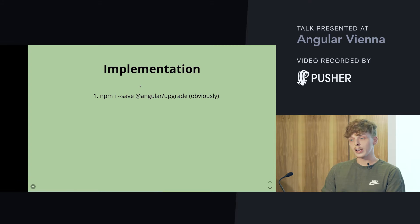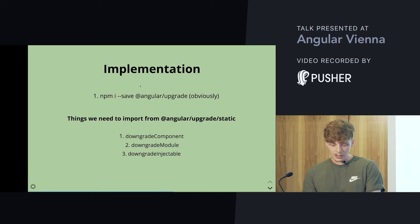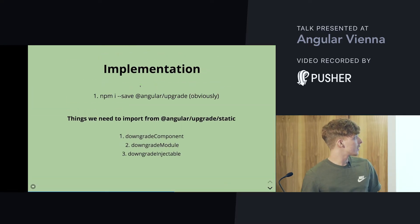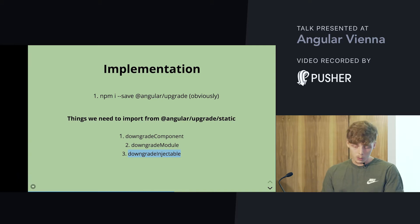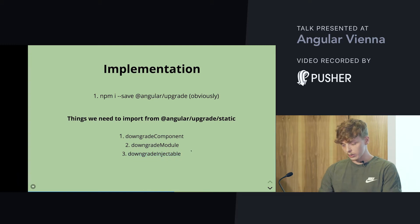For implementation, you first need to install the Angular upgrade package. From Angular upgrade slash static, the things you need are: downgrade components, downgrade module, and downgrade injectable — these three methods for components, modules, and services used in the Angular application.